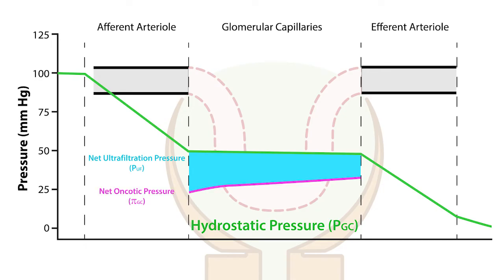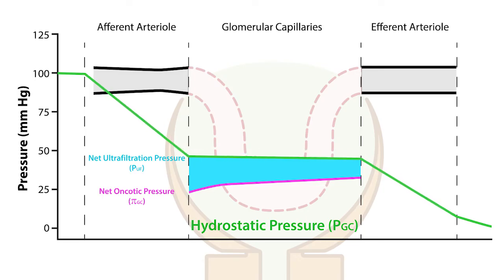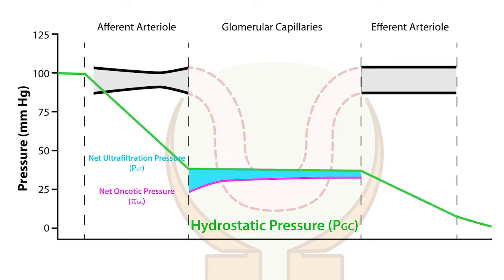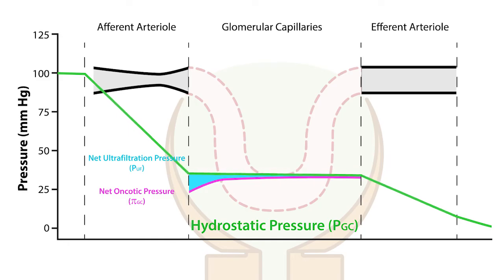Now let's use this animation to show how this occurs. Watch how increases in efferent arterial resistance, as seen by the narrowing of the arterial, lead to decreases in glomerular hydrostatic pressure, as shown by the green line. As the net hydrostatic pressure decreases, we see a parallel decrease in net ultrafiltration pressure, or GFR, as shown by the blue area.